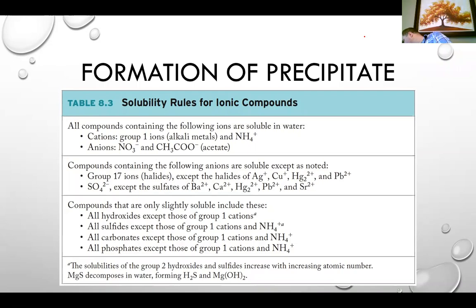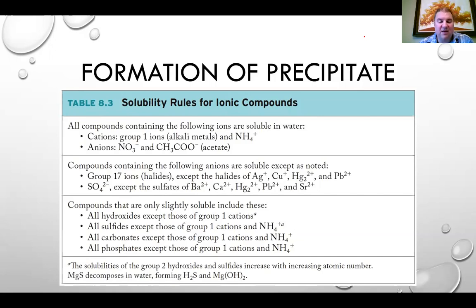From top to bottom on the solubility rules chart, the top entries are mostly or always soluble — our strong electrolytes. These include any compounds with group 1 cations (lithium, sodium, potassium, rubidium, cesium, francium) — all those salts are soluble — and ammonium salts are also soluble. Along with group 1 metals, anything with nitrate or acetate will always be soluble and aqueous, completely separated into ions.